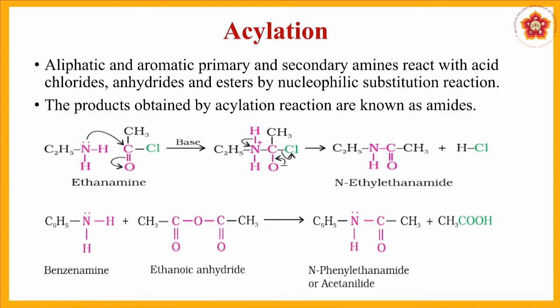Moving forward, like alkylation we also have acylation, but the type of reaction that happens in acylation is a little different. Acylation is mainly restricted to aliphatic and aromatic primary and secondary amines — tertiary amines are excluded. The products obtained in acylation are called amides, which have the general formula RCONH2 or RCONHR.